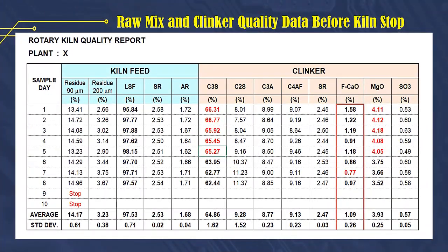This is the quality data during kiln operation before the kiln was stopped. These data indicate that there is a correlation between the content of MGO, C3S, and free lime. When MGO is high — greater than 4% — C3S is also high at greater than 62%, but free lime is still within the standard range.